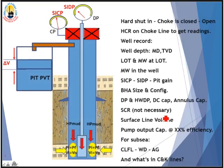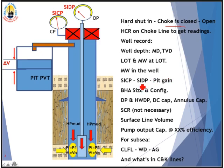Here is some basic information required prior to starting the first circulation. The shut-in procedure is done, the choke is closed, we open the HCR valve or choke valve to get pressure readings. You need: well record depth in measured depth, leak-off test mud weight, shut-in casing pressure, shut-in drillpipe pressure, BHA size and configuration, annulus capacity, drill string capacity, drill collar capacity, and the SCR — slow circulating pump rate. The SCR is nice to have but you can operate without it.